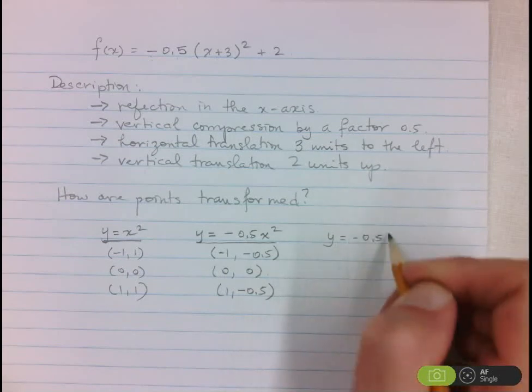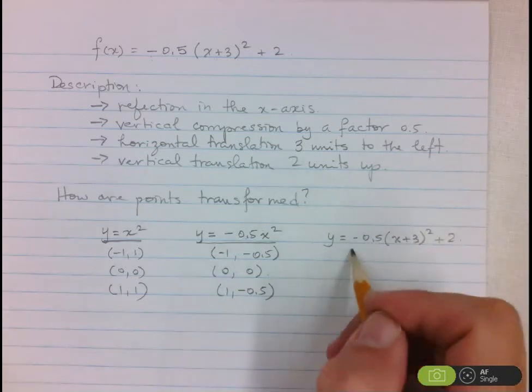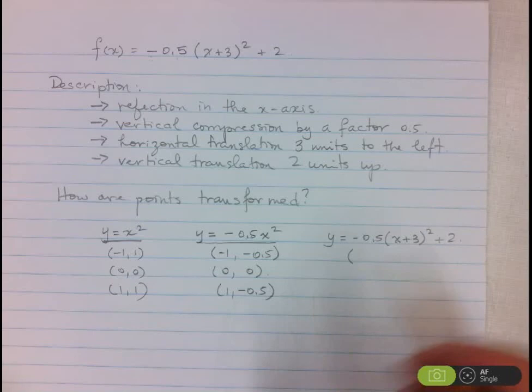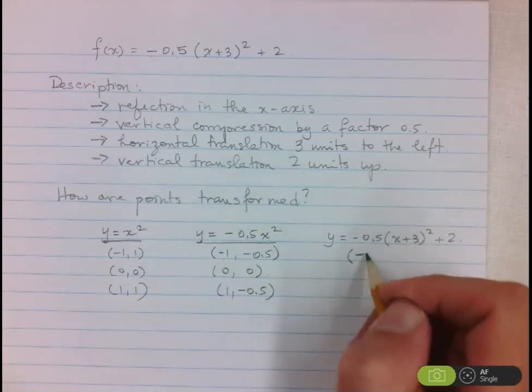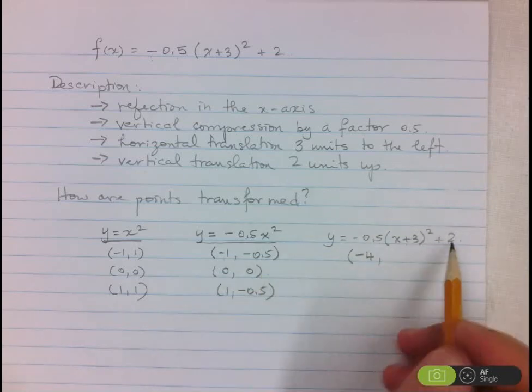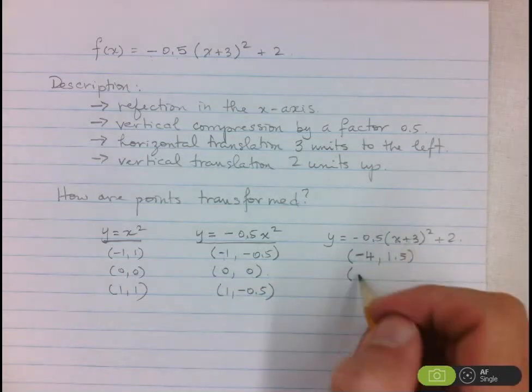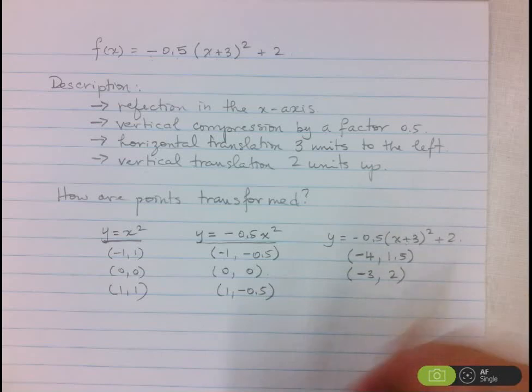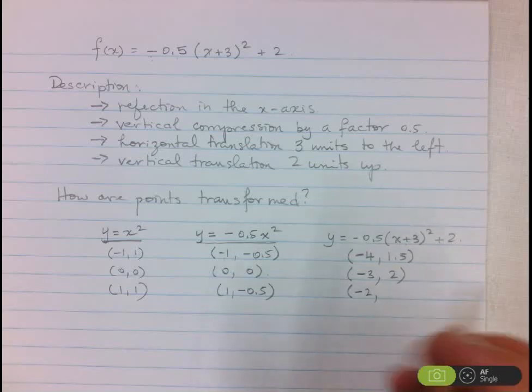So now that I've taken care of all the multiplication transformations, I can now deal with the additions and subtractions. So x plus 3 squared plus 2. So since the horizontal translation does not affect the vertical one, I'm going to do them both at the same time. So remember here, horizontal transformation always the opposite. So if I see x plus 3, I'm actually going to be subtracting 3. So here we have negative 1 minus 3, negative 4. Then the y values, we're going to add 2. So negative 0.5 plus 2 is 1.5. And let's do the same here. 0 minus 3, negative 3. This is 0 plus 2, 2. And then lastly, 1 minus 3, negative 2. And negative 0.5 plus 2 is 1.5.